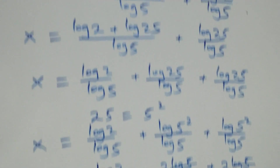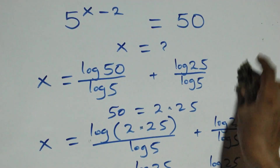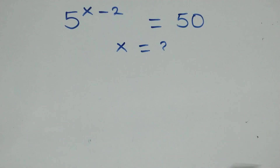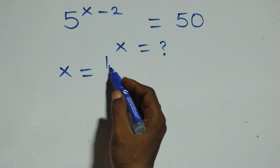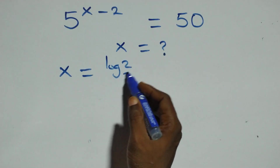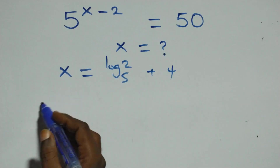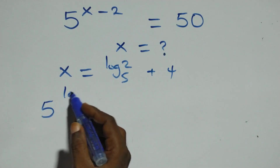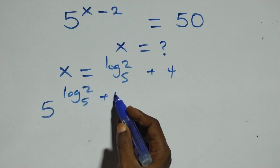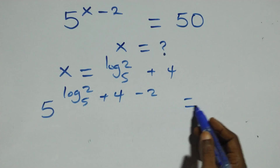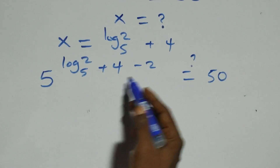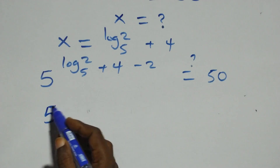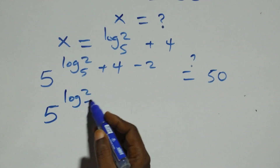Let's check to see if this satisfies the given problem. We substitute the value x equals to log base 5 of 2 plus 4 back into the equation. This gives 5 raised to the power of log base 5 of 2 plus 4, minus 2. Since 4 minus 2 equals 2, we can write this as 5 raised to power log base 5 of 2 plus 2.